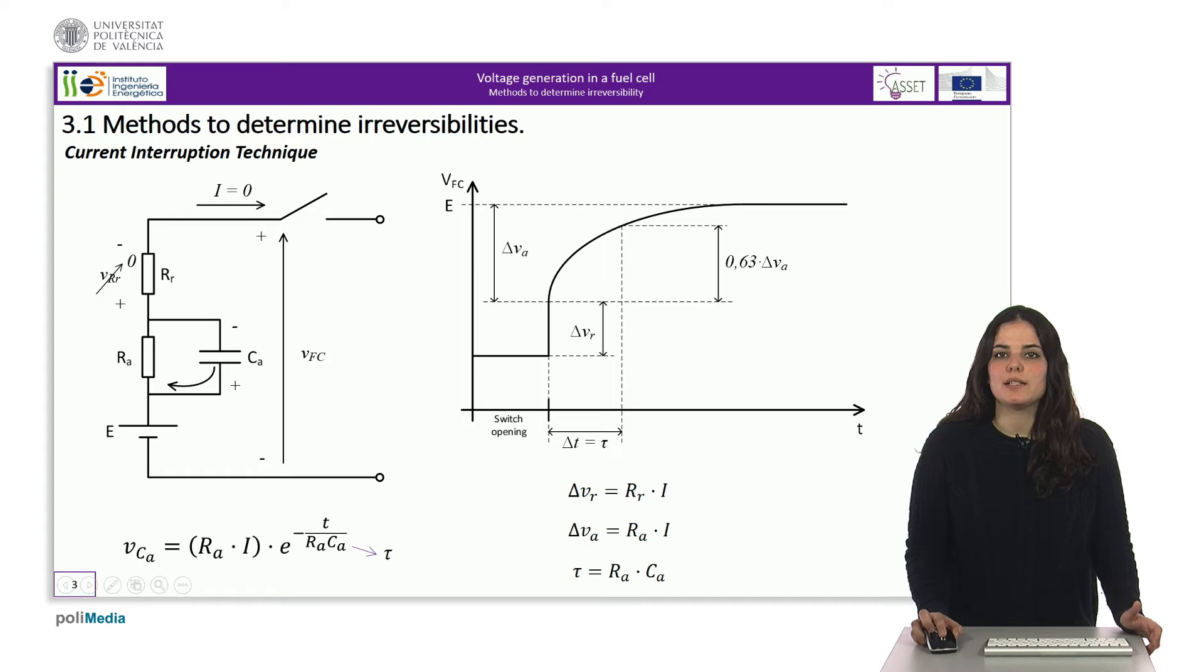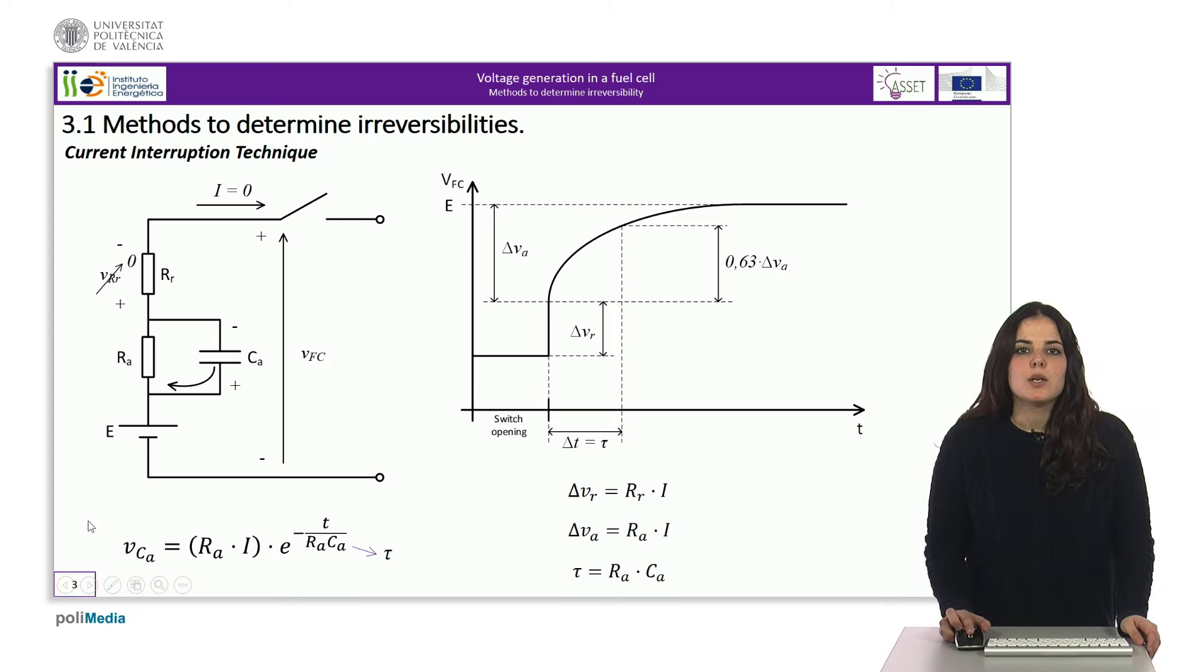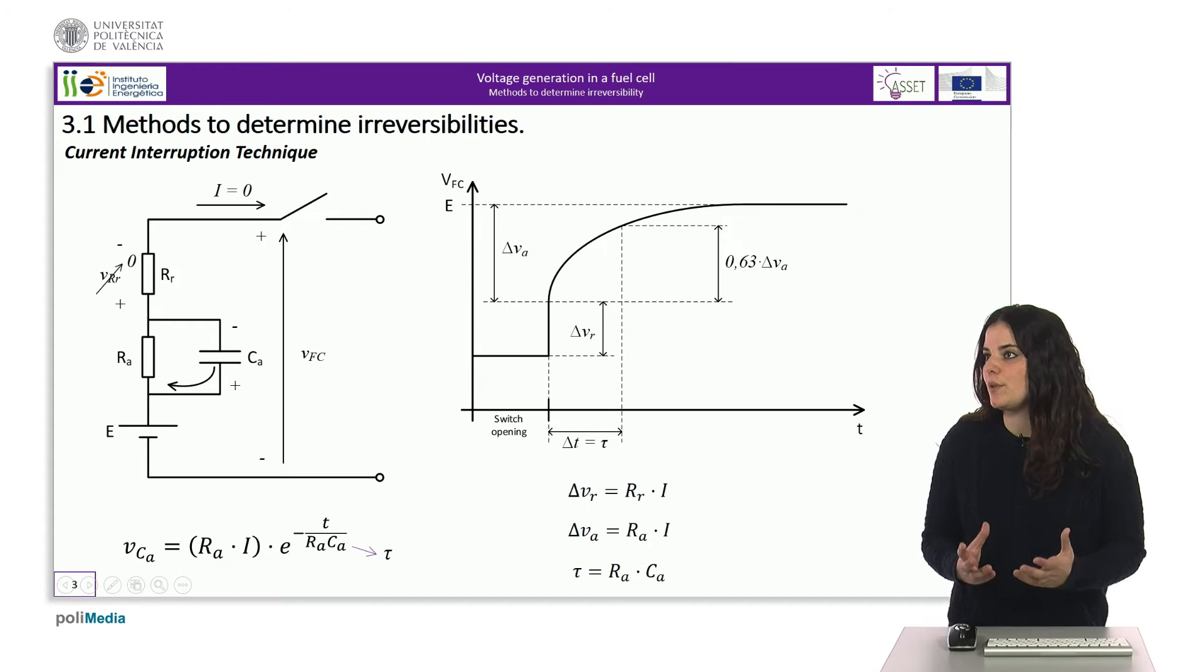The equation that defines the voltage discharge of the capacitor on the resistor is the one shown in the slide, where the product of R A times C A is the time constant of the discharge. In the graph, that time constant can be found from the instant in which the current is interrupted until the value of 63% of delta V A is reached, measured from the voltage at which the discharge begins. Finally, from the measured value of the time constant and knowing the value of R A, the value of C A of the capacitor can be calculated. With these last values, we have now all the elements of the model.